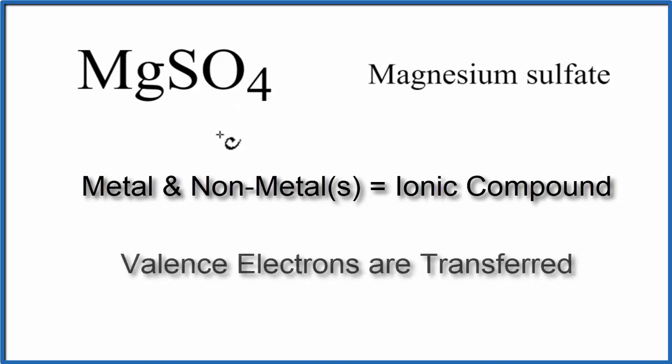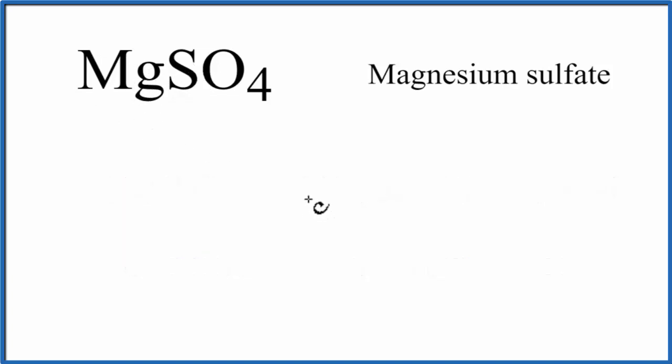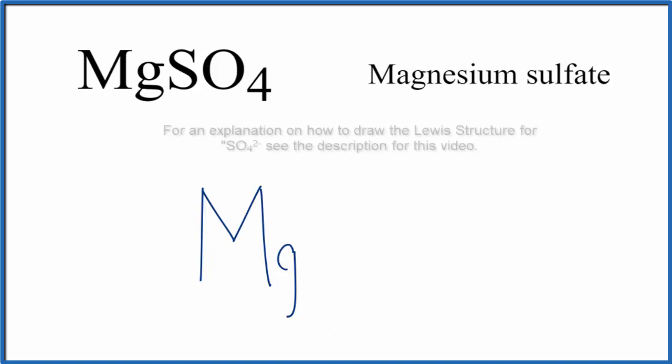In ionic compounds, valence electrons are transferred from the metal to the non-metal or non-metals. So we write Mg, and then we put the sulfate ion right next to it.